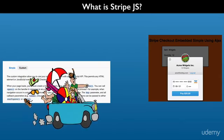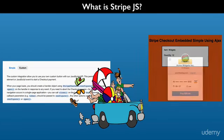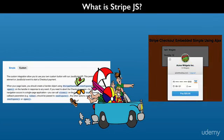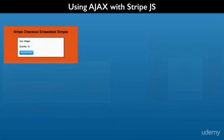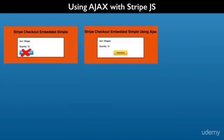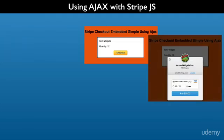For example, we can open and close the checkout form in our JavaScript code, and we can do that with our own customized button instead of the Stripe default button. StripeJS provides a notification when the user successfully checks out.